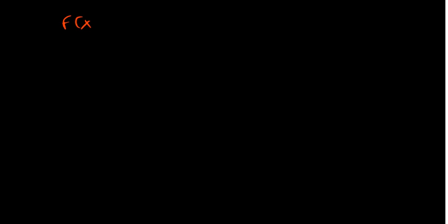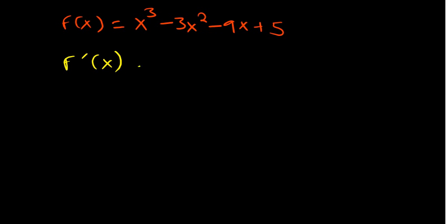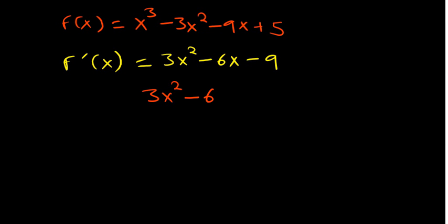Let's look at practice questions to solidify what we've talked about. Consider f(x) = x³ - 3x² - 9x + 5. Find all the critical points of that function. To do this, we differentiate the function to get f'(x) = 3x² - 6x - 9.